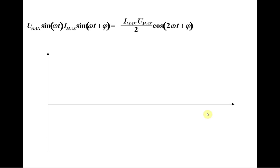This comes from trigonometry: the product of two sine functions will give one cosine function at twice the frequency plus an offset. This offset is actually active power.